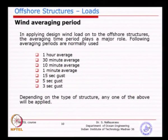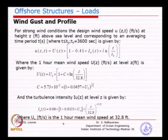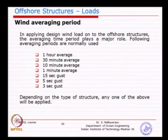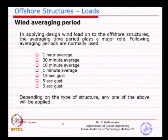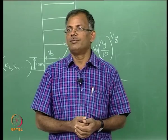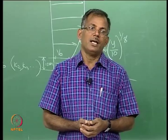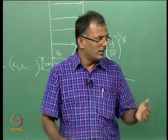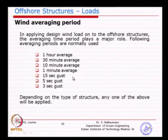If you are given a 3-second gust using the API formula, you cannot convert to other averaging periods — you need to start from a longer averaging period and work downward. That is why you have to ask recording agencies to provide the wind speed in one-hour average, then calculate the others. This is the practice in the US — they normally give one-hour average and you calculate the others. In India, where 3-second gust is given, agencies need to separately calculate and provide at least one-hour and 10-minute averages required for design purposes.